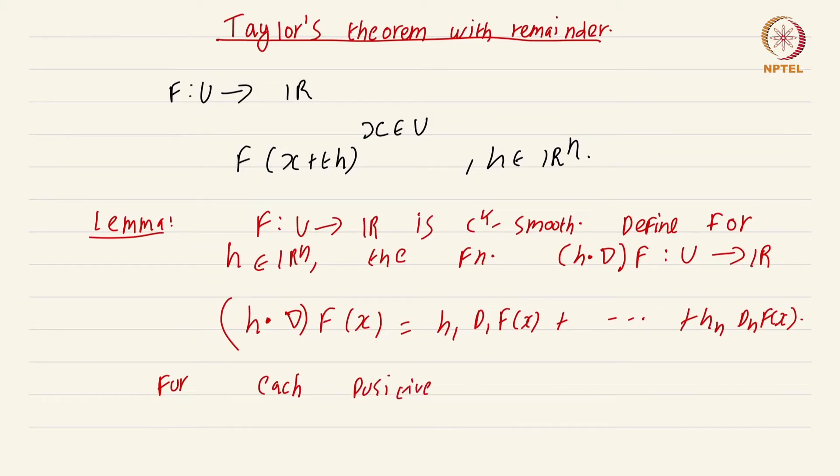For each positive integer r less than or equal to k, we denote by h dot nabla power r of f to be the function from u to r defined recursively.